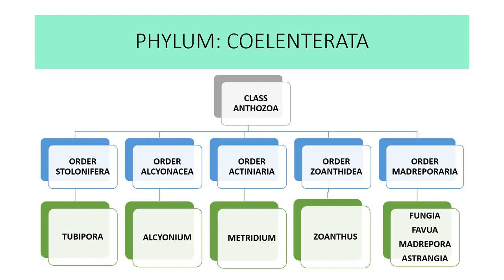The order Stolonifera with organism Tubipora. Second order is Alcyonacea with example Alcyonium. Third order is Actiniaria with example Metridium. Fourth is Zoanthidea with example Zoanthus. And the fifth order is Madreporaria with examples Fungia, Favia, Madrepora, and Astrangia. We will take all the examples one by one.